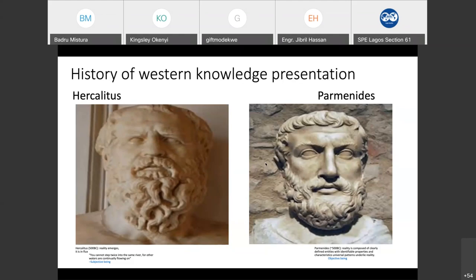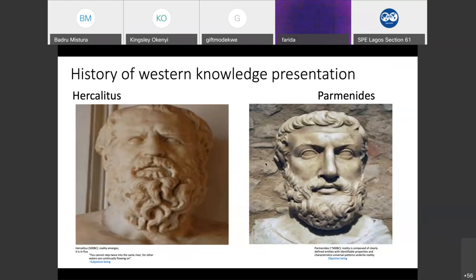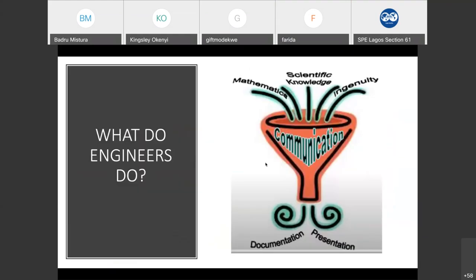Why am I showing this? The reason is that these two men were able to present what reality is and what thought is. One said reality is subjective; the other said it is objective. They were able to influence what we know as natural science. If you look at all our natural sciences — most of our inventions from Newton to Darcy to Bernoulli — all came from these schools of thought. These two people, 200 years later, influenced Aristotle, who is today known as maybe the father of science. This shows that the way we document reality is very important.